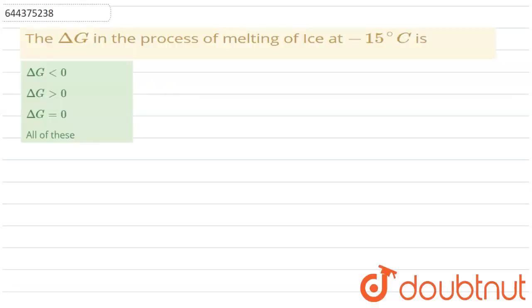Hello everyone. In this question we have to find out the delta G when ice melts at minus 15 degree Celsius. So, let's see this question.